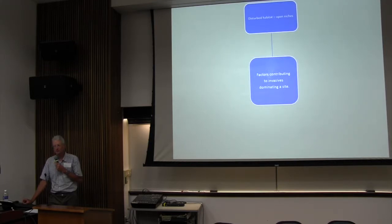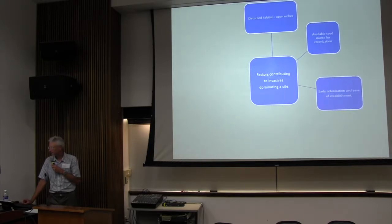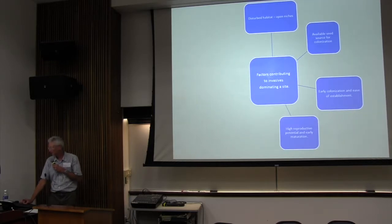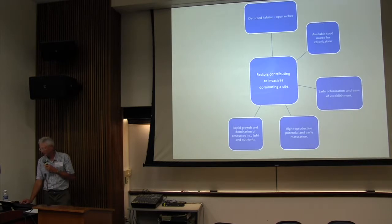Generally you have some kind of disturbance, and usually that's human in nature. Then you need a seed source — that seed source has to be available for an invasive problem to begin. Most invasives have the ability to colonize early and establish very easily under a wide range of growing conditions and habitats. They generally have a high ability to reproduce and spread. Many plants mature at a very early age, giving them the ability to get established very quickly, and they can put on a lot of growth and out-compete native plants.